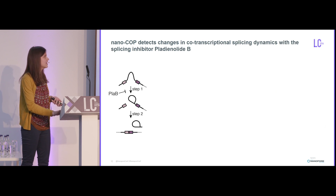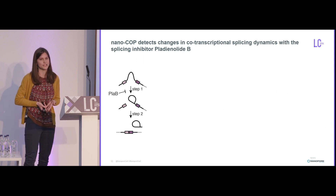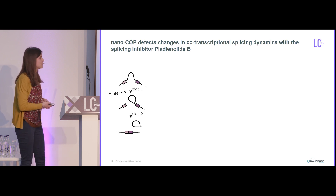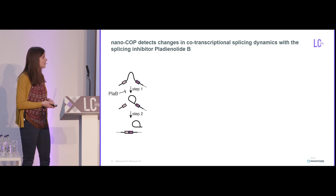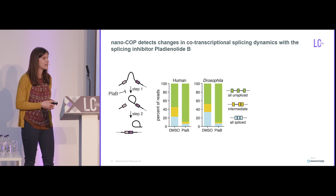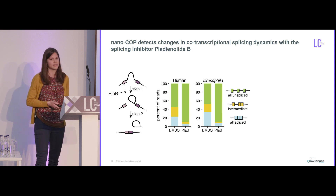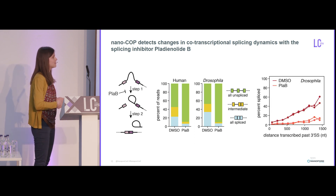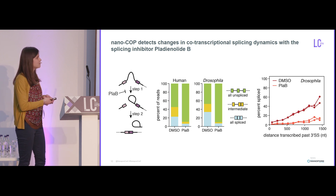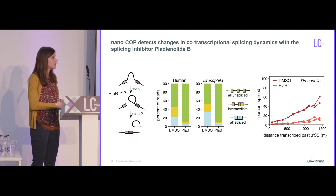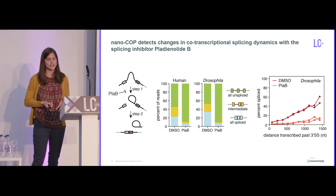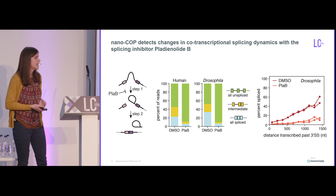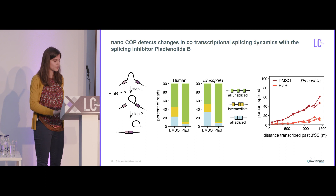We can detect differences in splicing between cell types, but what if we actually perturb the splicing reaction — can we detect that in the data? We used a splicing inhibitor called Pladienolide B, which interferes with splicing before the first catalytic step. When we treat cells with Pladienolide B and look at the data by NanoCOP, we see very little splicing — less than 10% of reads have any evidence of splicing. Looking at co-transcriptional splicing, in DMSO we see more rapid splicing kinetics in Drosophila, but in Pladienolide B there's very little splicing, confirming it's really inhibiting co-transcriptional splicing. This suggests Pladienolide B is a potent and global inhibitor of co-transcriptional splicing, and also validates that NanoCOP is detecting early processing dynamics.